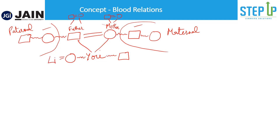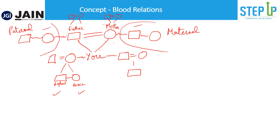Your nephew is your sibling's son — so if your sister or brother is married and has a son, that's your nephew. Your niece is your sibling's daughter. So to summarize: we are clear on uncle, paternal uncle, maternal uncle, nephew, niece, and grandparents. These are the key relations you should know before attempting these questions.